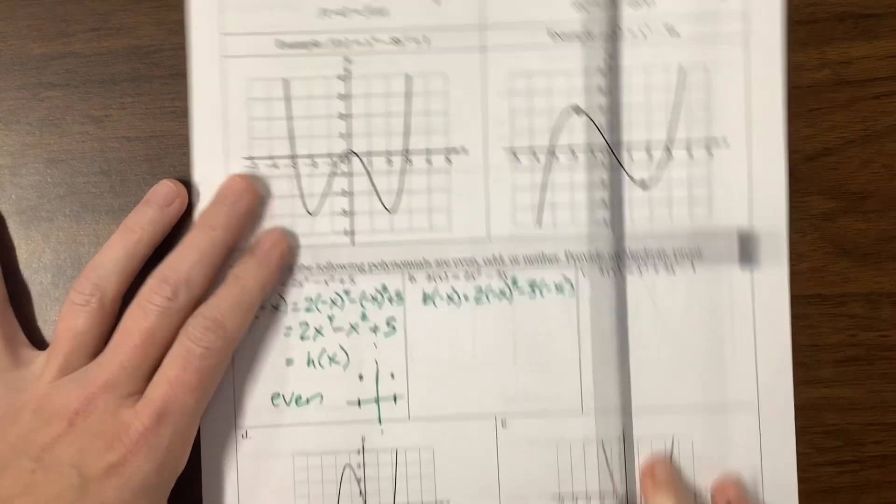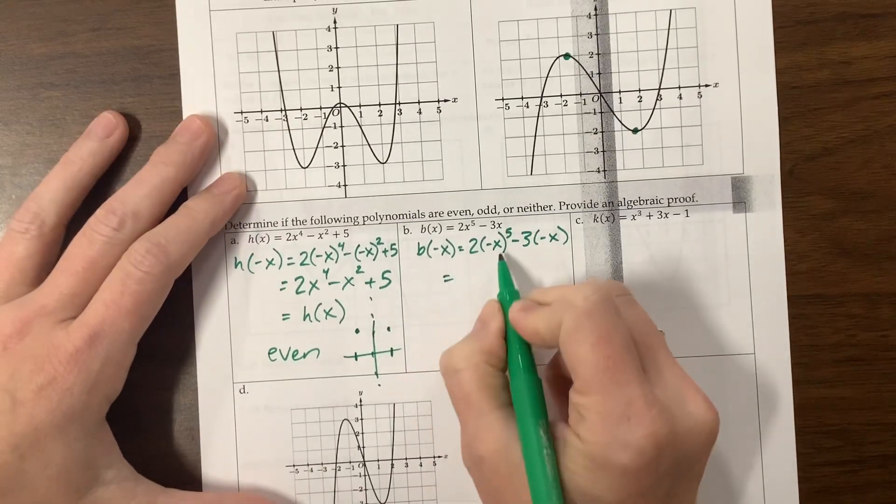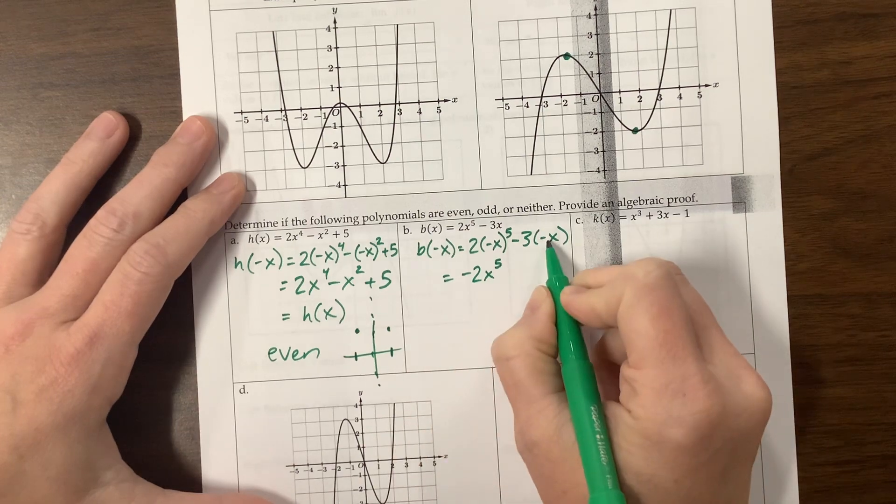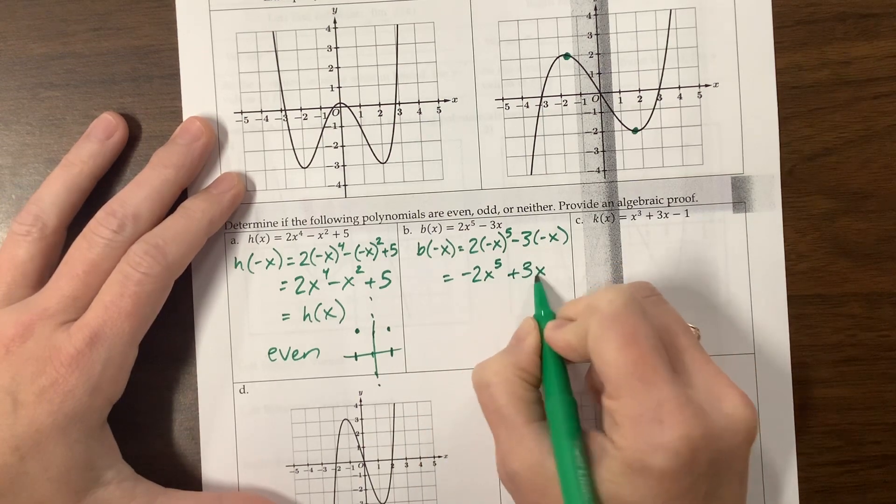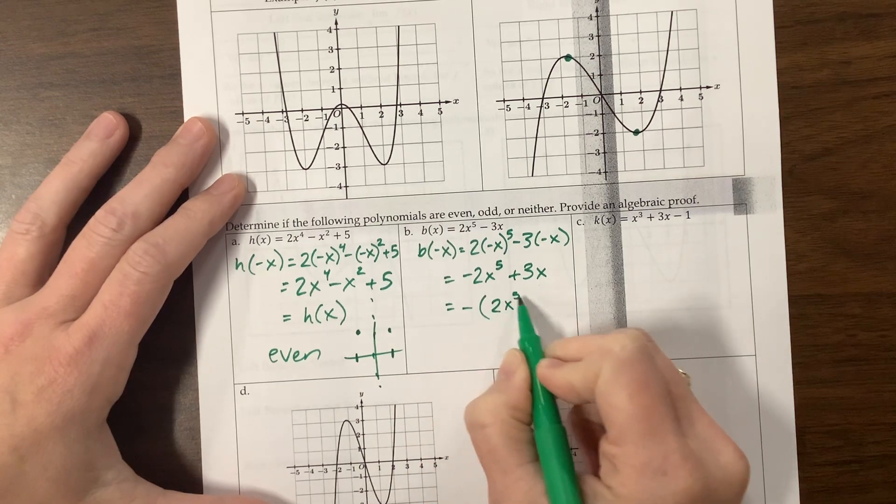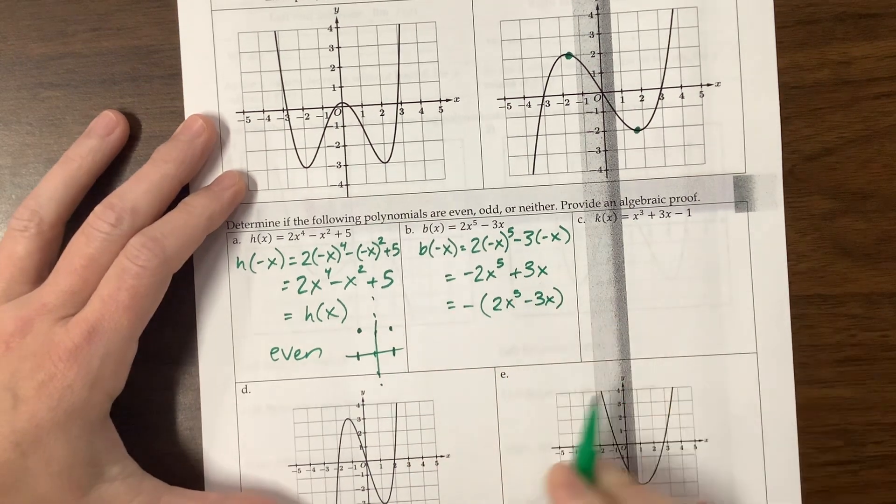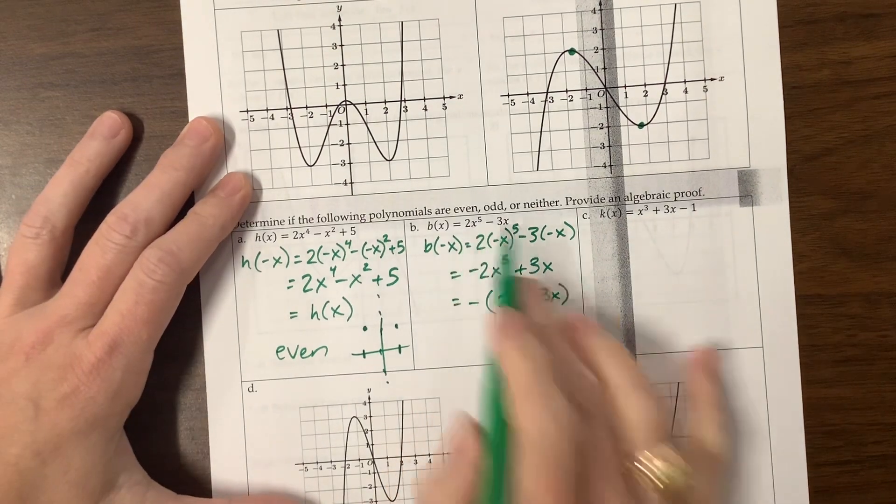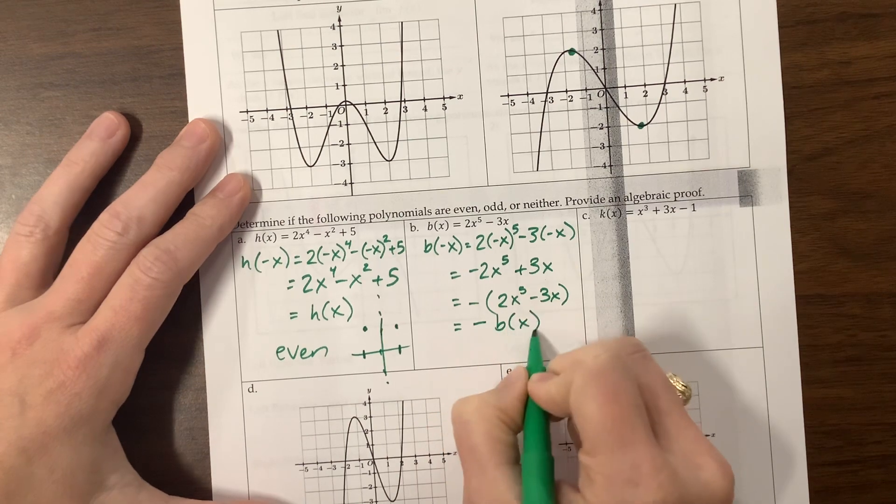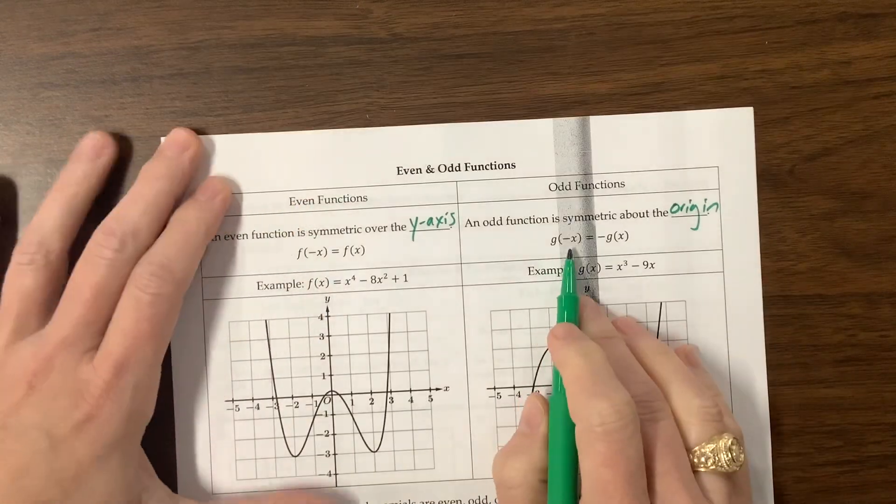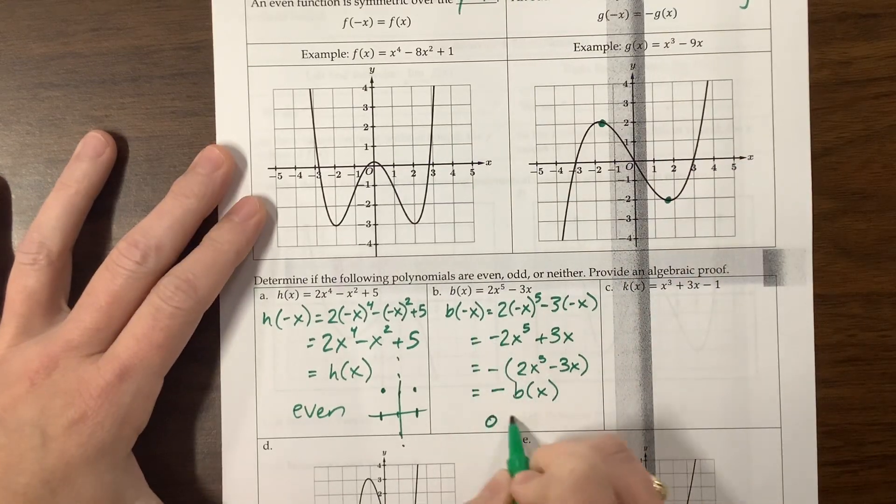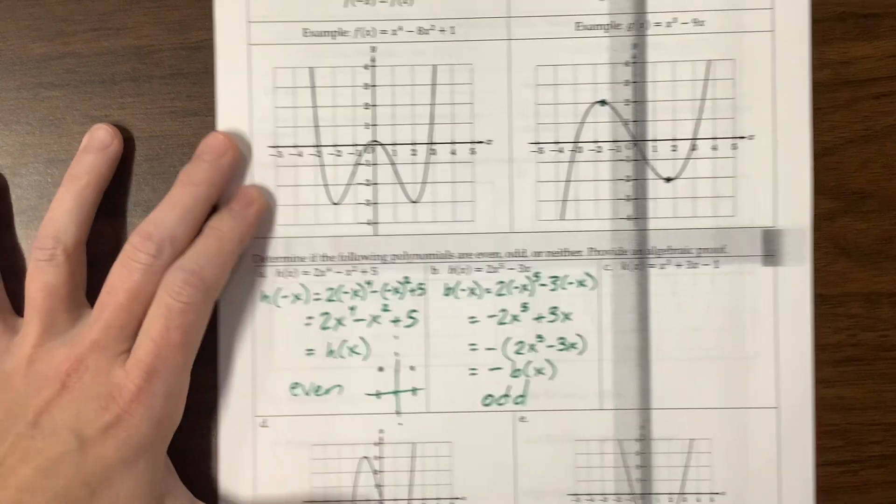Next one, b of negative x is equal to 2 times negative x to the fifth minus 3 times negative x. So on this one, a negative to the fifth power is a negative. So this becomes negative 2x to the fifth. A negative times a negative is a positive right here. Well now, let's see what happens. If I factor out a negative, I get that expression. This is exactly equal to what I started with. So this is equal to negative b of x. And when g of negative x equals negative g of x, when b of negative x equals negative b of x, then we have an odd function. And so that's the proof I'd be looking for there.